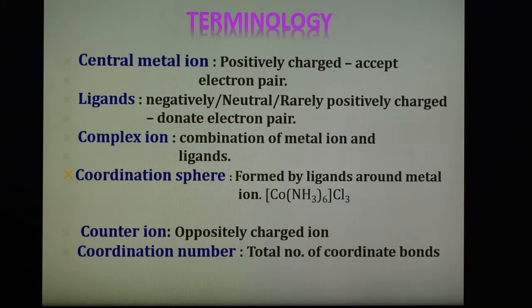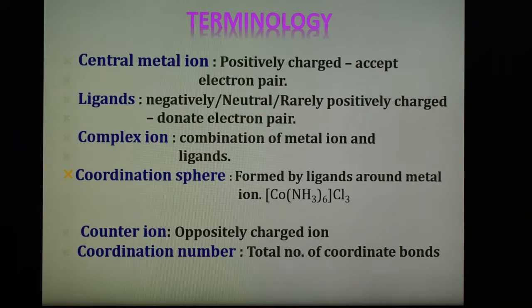The common donor atoms in the ligands are nitrogen, oxygen, and sulfur. If a ligand contains one donor atom, it is known as a monodentate ligand — for example, ammonia or water. If there are two donor atoms in the ligand, it is known as bidentate — for example, ethylenediamine. When the ligand contains two or more donor atoms, it is called multidentate, and the ligand is said to be a chelating ligand. Finally, the charge on the ligand is important because it determines many properties of the compound.